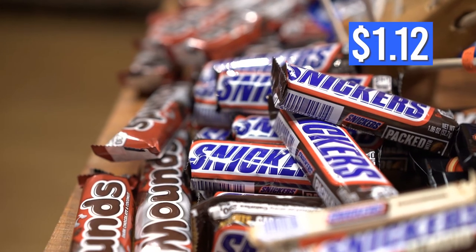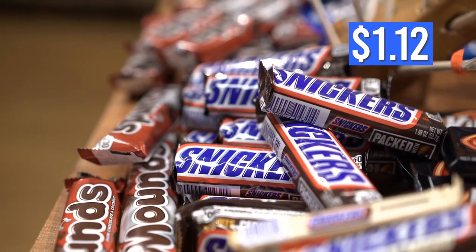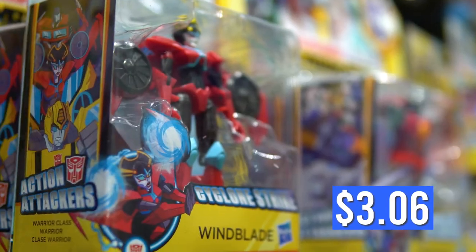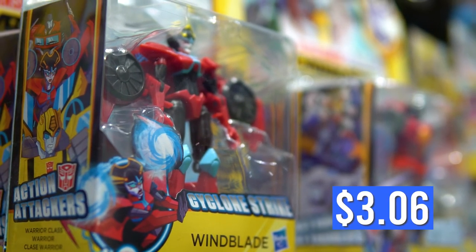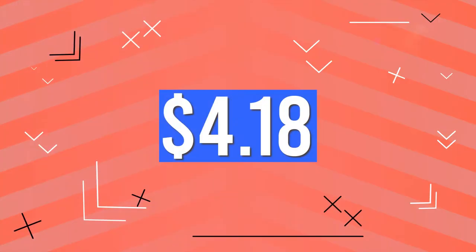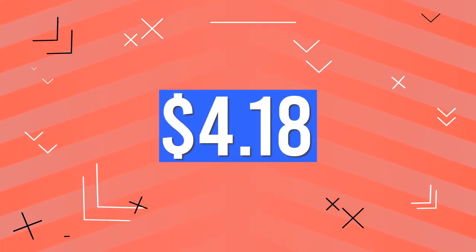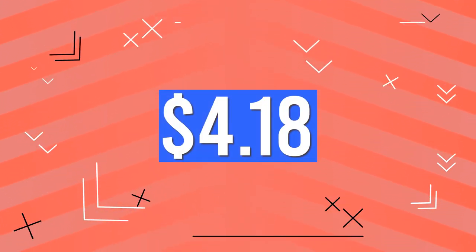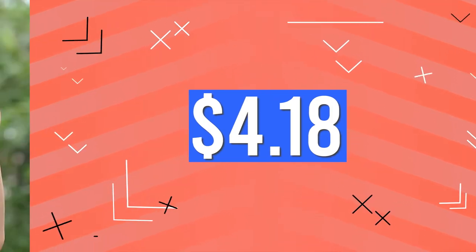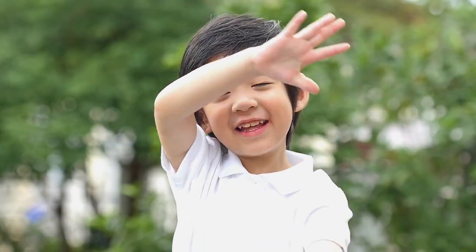If you were trying to buy a candy bar for $1.12, and a small toy for $3.06, $4.18 is the total amount you would need to pay to buy both items. Great job learning how to add up money!